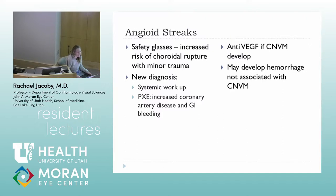Our standard treatment is anti-VEGF agents for CNVMs. In the past we've done focal laser and photodynamic therapy, but for histo and angioid streaks we now start with anti-VEGFs. Another thing to keep in mind for patients with angioid streaks is they'll often get spontaneous hemorrhages not associated with the CNVM. To differentiate, you would need to do a fluorescein angiogram to look for the choroidal neovascular membrane.